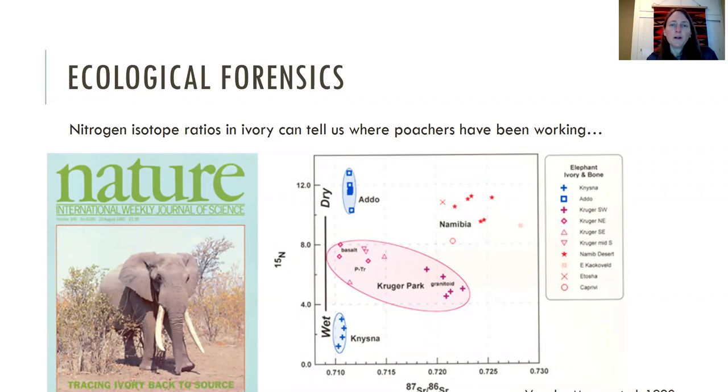Here's an example from Nature where the scientists were able to trace ivory from these seized poached collections of ivory back to its source. So where was the elephant living? And they were using N15 and they're using a stable isotope of strontium in the ivory to figure out where they were from.